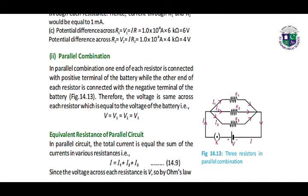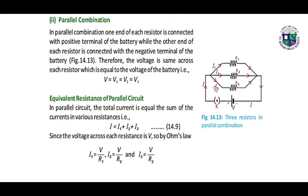Next, we have the parallel combination. Here we have the picture of three resistors combined in parallel. In parallel combination, one end of each resistor is connected to the positive terminal of the battery while the other end of each resistor is connected to the negative terminal of the battery. Therefore, the voltage is the same across each resistor, which is equal to the voltage of the battery: V equals V1 equals V2 equals V3.